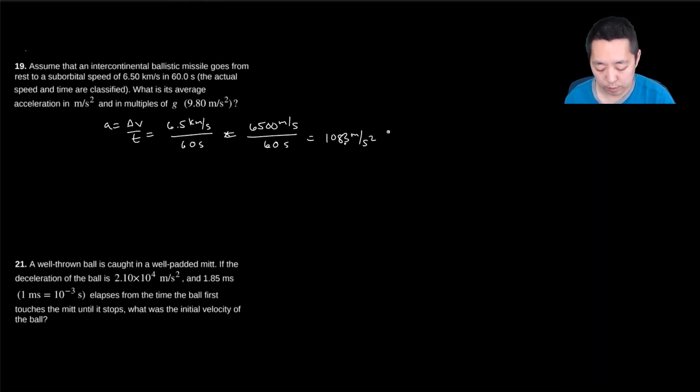And if I divide that by 9.8, that is 11 G's. So 108.3 meters per second squared and 11 G's.